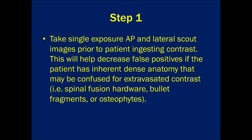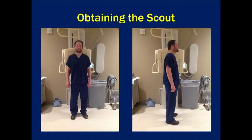Now we will go through the steps that should be performed in an esophageal leak study. Step 1: obtain single exposure scout images of the esophagus in the standing AP and lateral positions. This is a key step as it will help you identify false positives during interpretation. The patient is shown in the AP position on the left and the lateral position on the right. The radiology technician will typically perform this step.